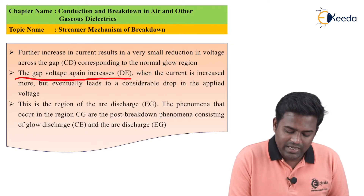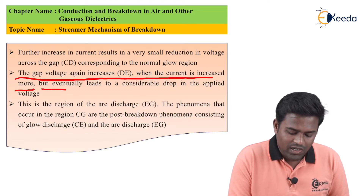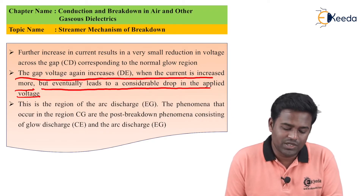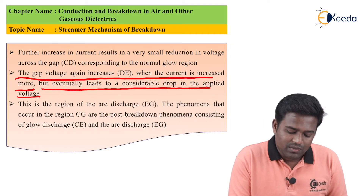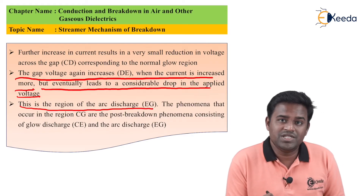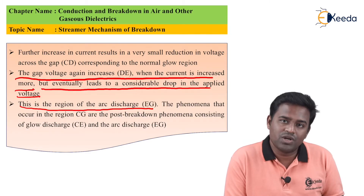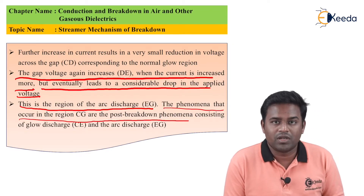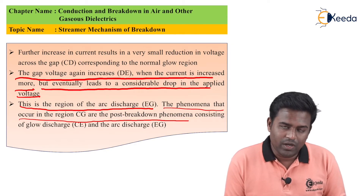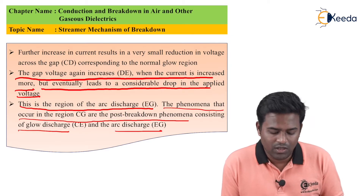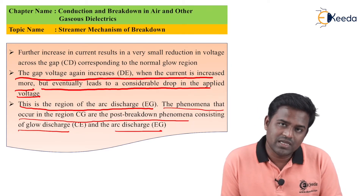The gap voltage again increases from D to E when current is increased more, but eventually leads to a considerable drop in applied voltage. Notice that here also there will be a voltage drop due to some sparks. This region of arc discharge — that is, the EG region — is the arc discharge. The phenomenon that occurs in region CG is the post-breakdown phenomenon, consisting of glow discharge and arc discharge. Glow discharge is represented by the C to E region, and arc discharge is seen in the E to G region.